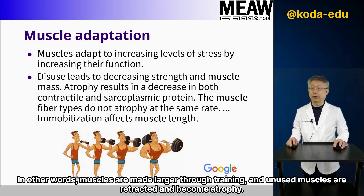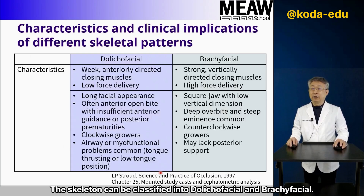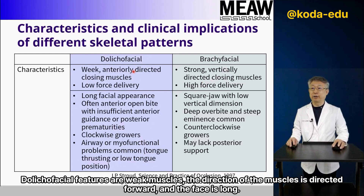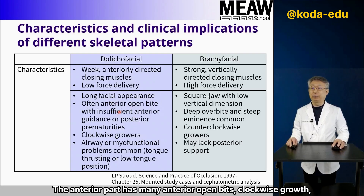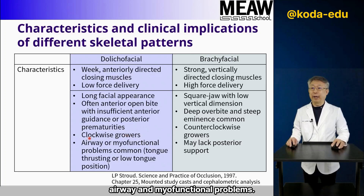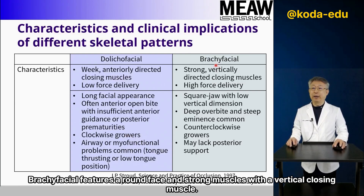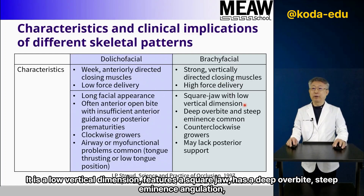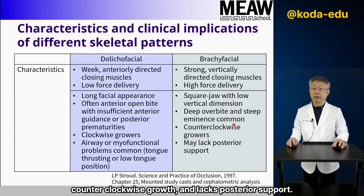Muscles are made larger through training, and unused muscles retract and become atrophied. The skeleton can be classified into dolichofacial and brachyfacial. Dolichofacial features weak muscles, with muscle direction oriented forward and a long face. The anterior part frequently shows anterior open bite, clockwise growth, and airway and myofunctional problems. Brachyfacial features a round face and strong muscles with a vertical closing muscle direction. It is a low vertical dimension, features a square jaw, has a deep overbite, steep eminence angulation, counterclockwise growth, and lacks posterior support.